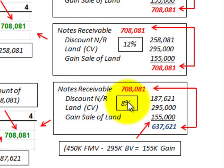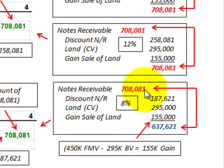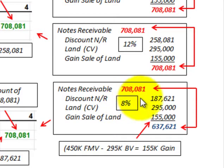Making a comparison: had we used the 8% interest rate, we would have had notes receivable at $708,081. But the discount on notes receivable calculated at the 8% rate was $187,621, plus the land's carrying value of $295,000, plus the gain on the sale of the land of $155,000, gives us a total of $637,621. The notes receivable debit of $708,081 does not compare with the credit total of $637,621, so we can determine that 8% would be an unreasonable rate to use.